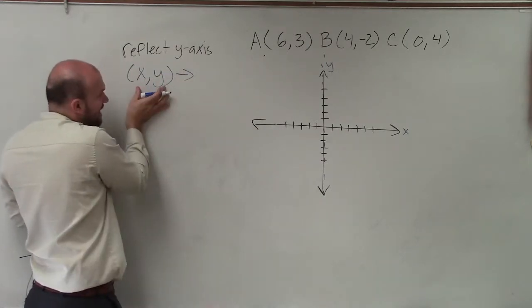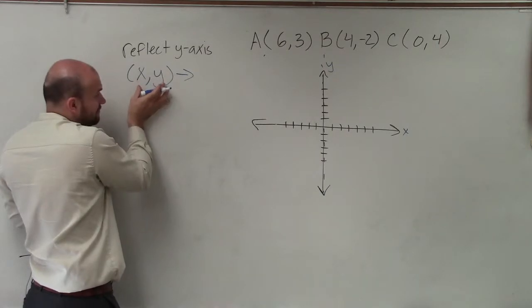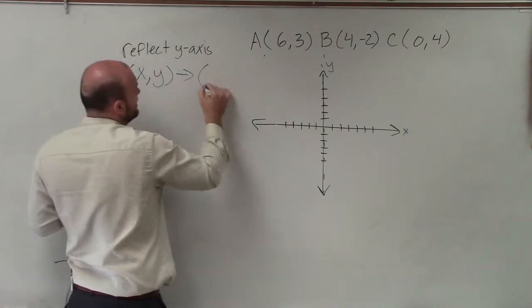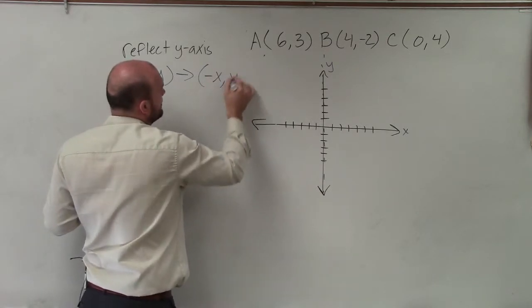So when I reflect, if I have an original coordinate, x comma y, my new coordinate is going to be negative x comma y.